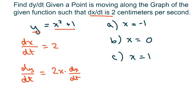We need to find this given that X equals negative 1. So for the first one, part A would be 2 times X, which is negative 1, times the derivative of X with respect to T, which is 2.